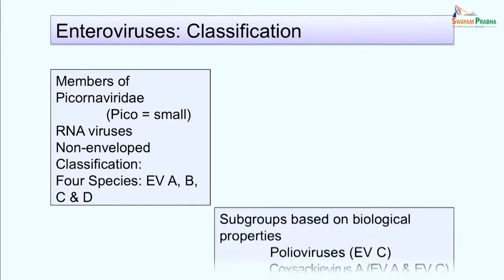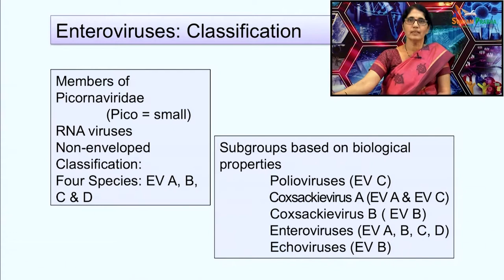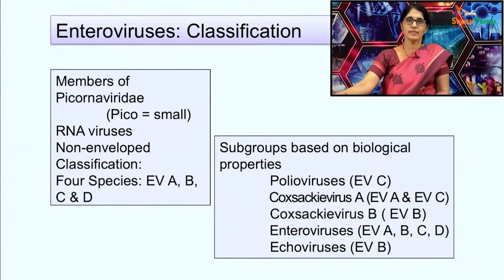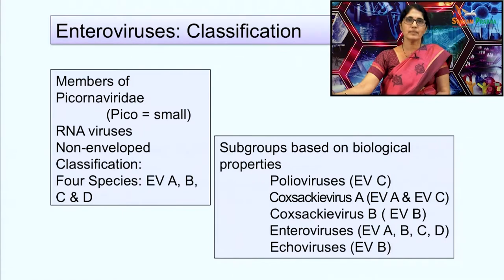The popular way of classifying enteroviruses is based on biological properties. The enteroviruses involved in acute flaccid paralysis are polioviruses which are enterovirus species C; Coxsackie virus A which belong to enterovirus species A and C; Coxsackie virus B which belong to enterovirus species B; enteroviruses belonging to all four species A, B, C, D; and echoviruses which belong to enterovirus species B. Echoviruses — enteric cytopathogenic human orphan viruses — are sometimes involved in the causation of acute flaccid paralysis.